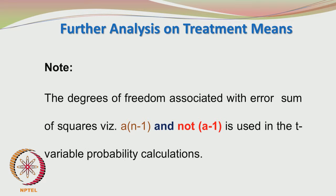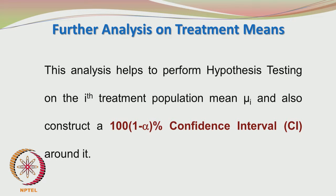Regarding degrees of freedom for the t distribution: we always associate the degrees of freedom with the standard deviation being used. Here we use the square root of mean square error, which is associated with A×(N-1) degrees of freedom. Hence the degrees of freedom in the t distribution is also A×(N-1). If we can do a t test based on a set of data, we can also construct the confidence interval.